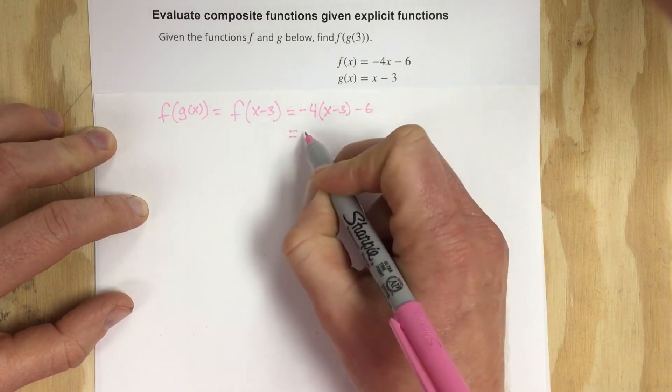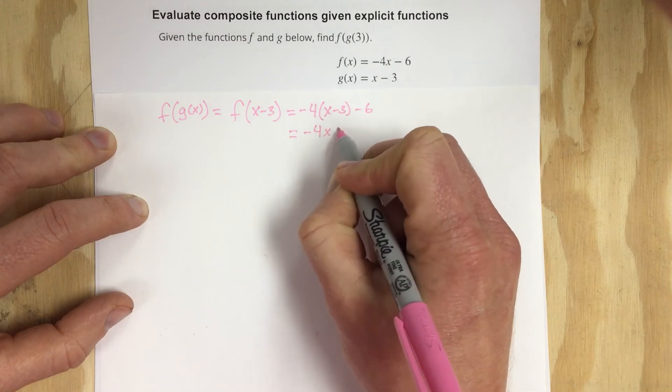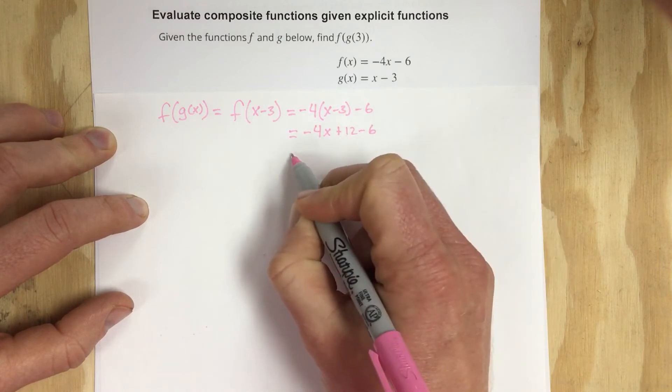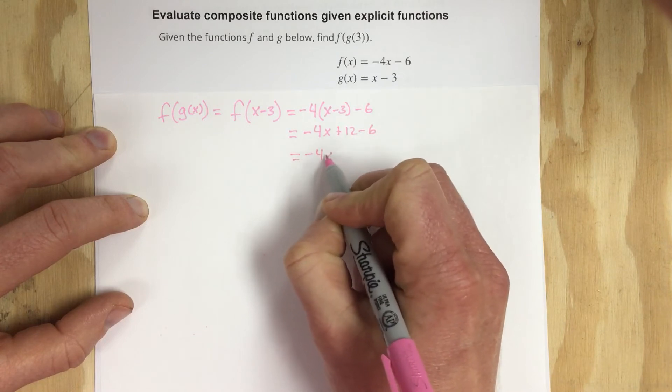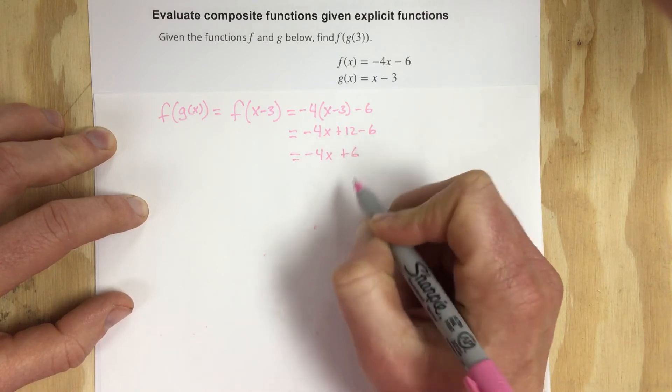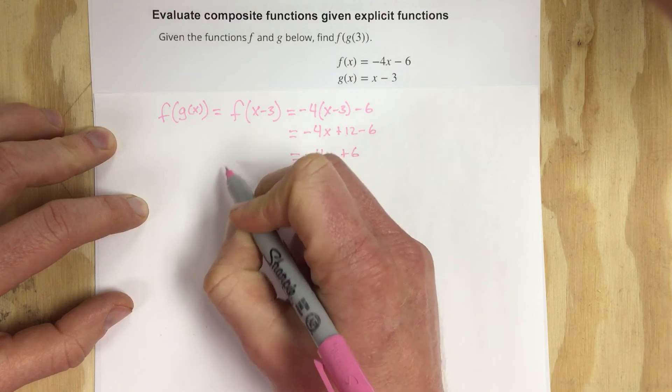That gives you -4x + 12 - 6 which is -4x + 6. So that's f of g of x.